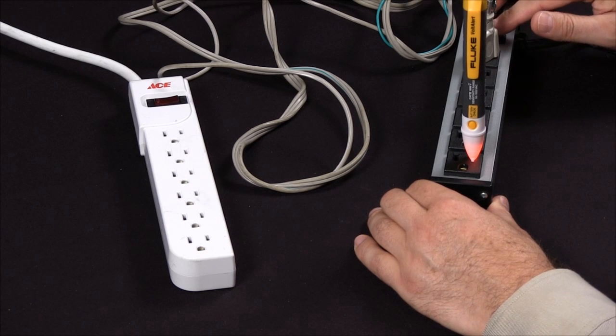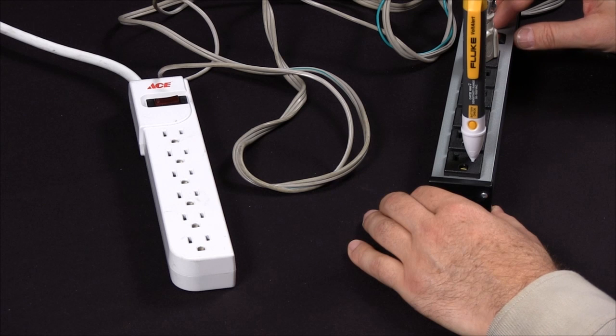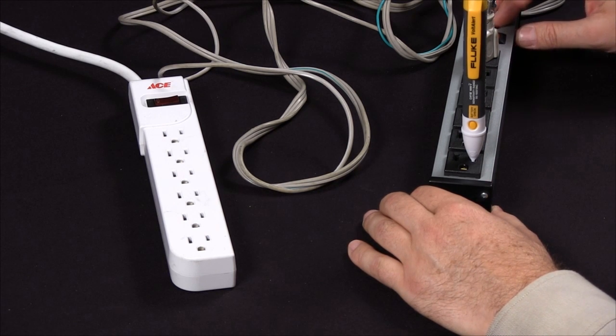Now when I do have power and I break the circuit, thereby indicating an open circuit, how can I be sure that I do not have power and it's not the battery in the Volt Detector itself?